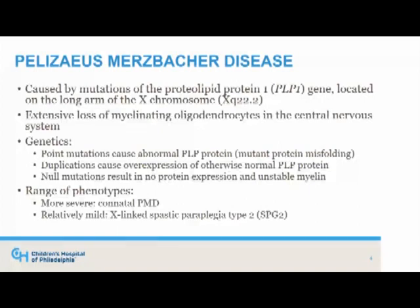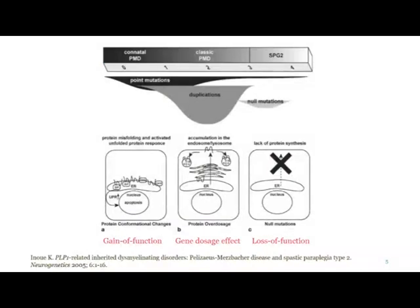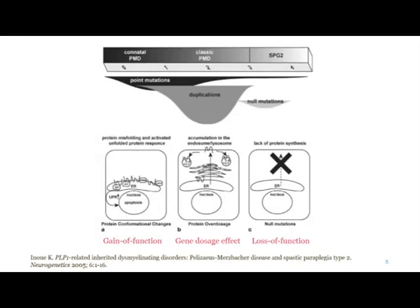There are a range of clinical phenotypes, including the severe conatal PMD presenting early in infancy, and a relatively mild X-linked spastic paraplegia on the opposite end of the spectrum, presenting a little bit later in life. Point mutations often result in early disease, duplications are the most common genetic change of PLP1 resulting mostly in classic symptoms, and null mutations cause spastic paraplegia. This is important for designing future therapies, thinking about these different gain-of-function, gene dosage, and loss-of-function mechanisms.